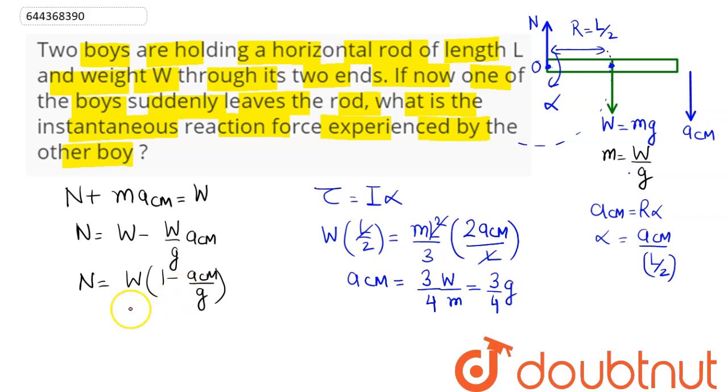Now substituting the value here, so this comes as W*(1 - 3G/(4G)). So, here this comes as 1 - 3/4 = 1/4, hence the instantaneous reaction experienced by the other boy is W/4. Hence W/4 is our answer.